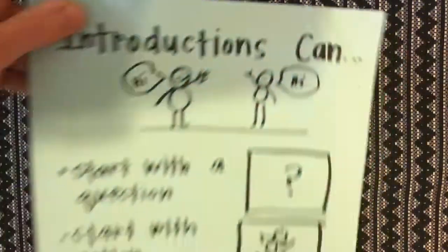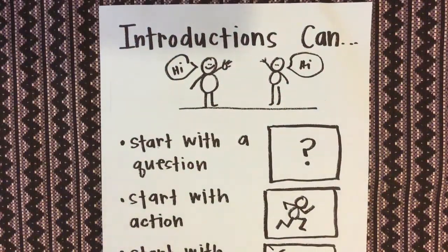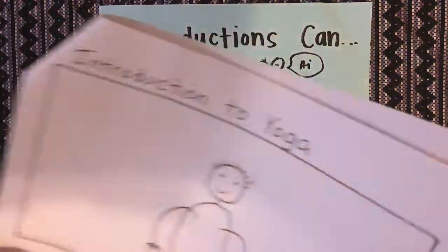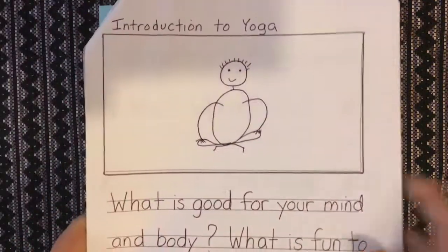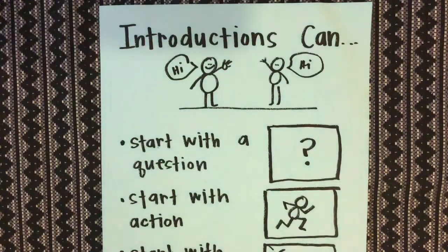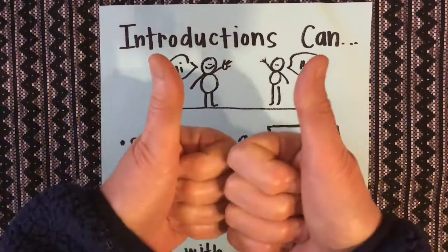So today when you go back to your writing, think about how you can add an introduction. When you add an introduction, you're going to have to go to the work of taking your book apart — get a staple remover just like I did. Write your new introduction on a new page, then stick it in your book and restaple it. Remember, you could start with a question or start with some action. Off to your writing!